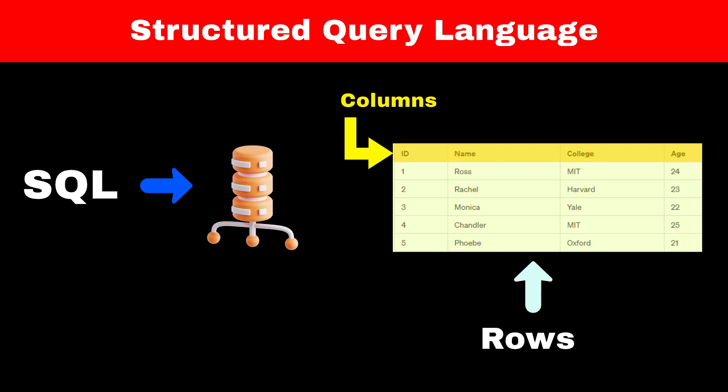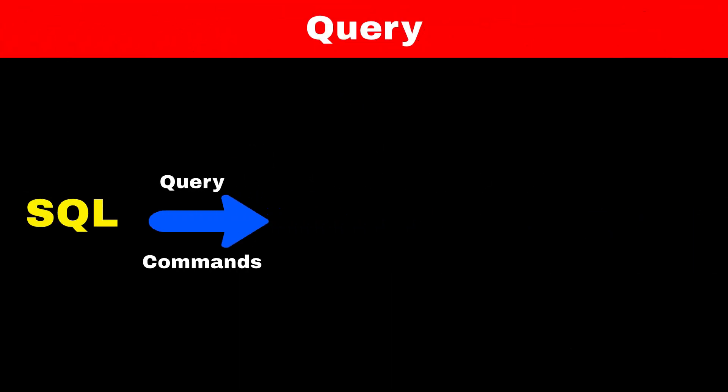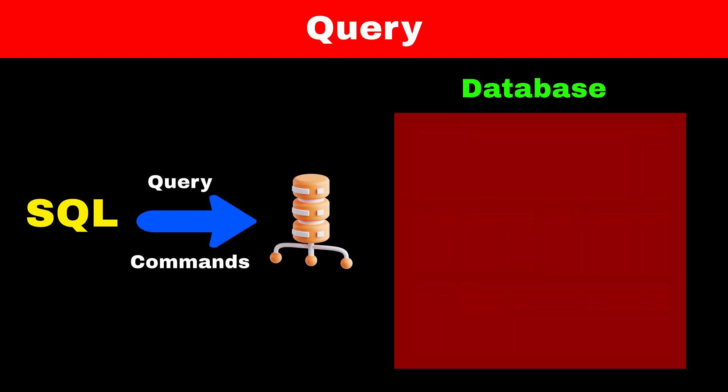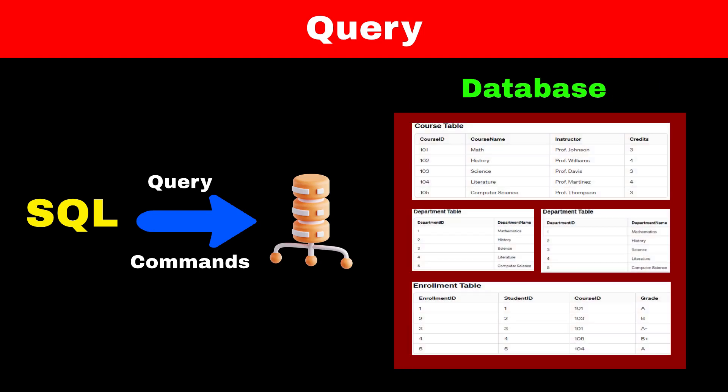Now, if you want to read data from these tables, we have to use queries in SQL. Queries are like commands that we give to the database to perform some operation. Since one database can have hundreds of tables and one table can have hundreds of columns, so while reading, first we have to select which columns we want to read and from which table we want to read them.